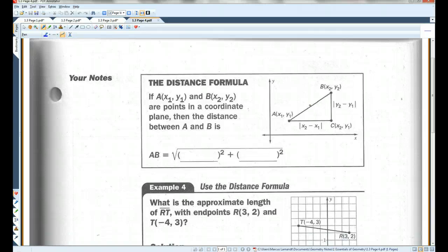The distance formula. This is another good thing for you guys to memorize. AB is the square root of X2 minus X1 squared plus Y2 minus Y1 squared.